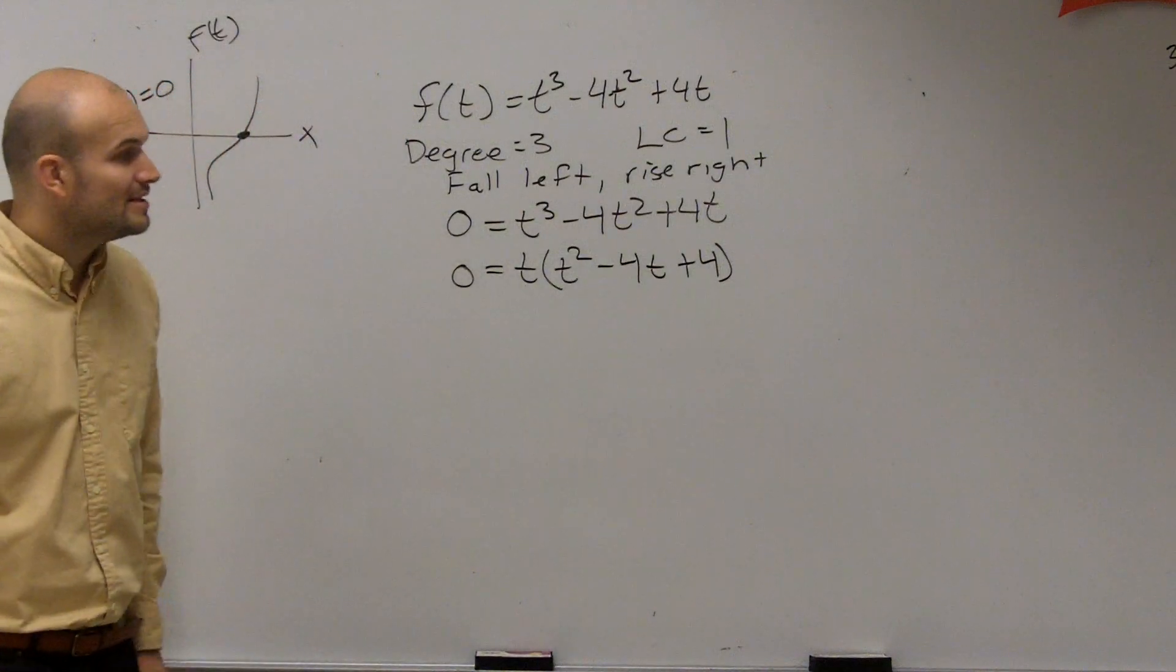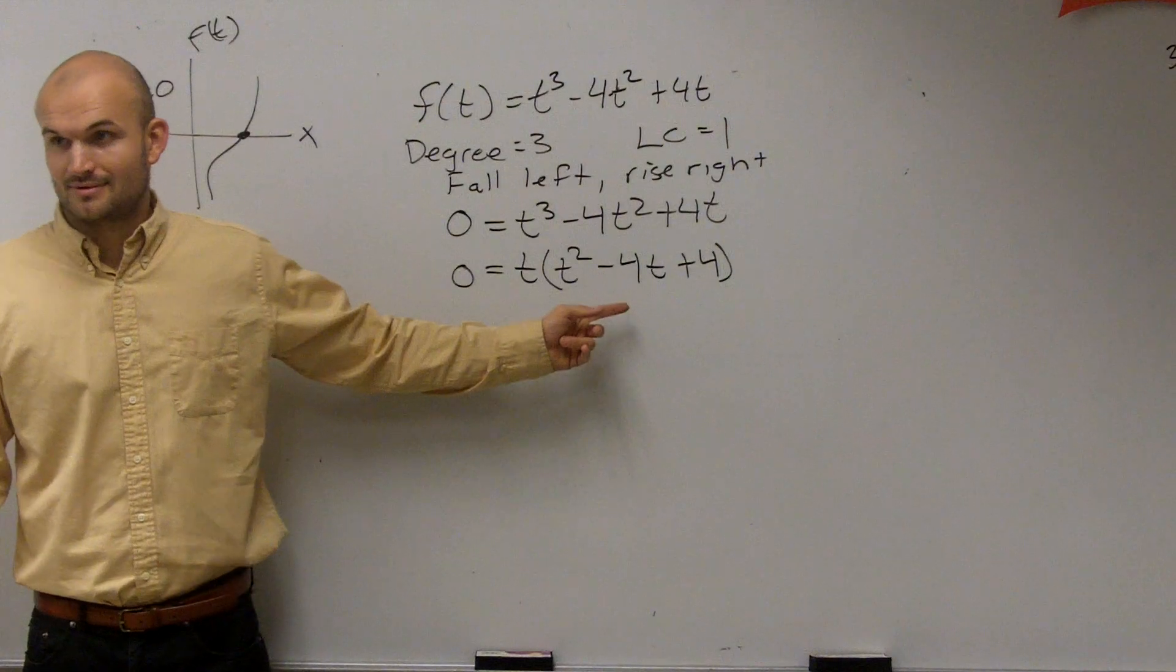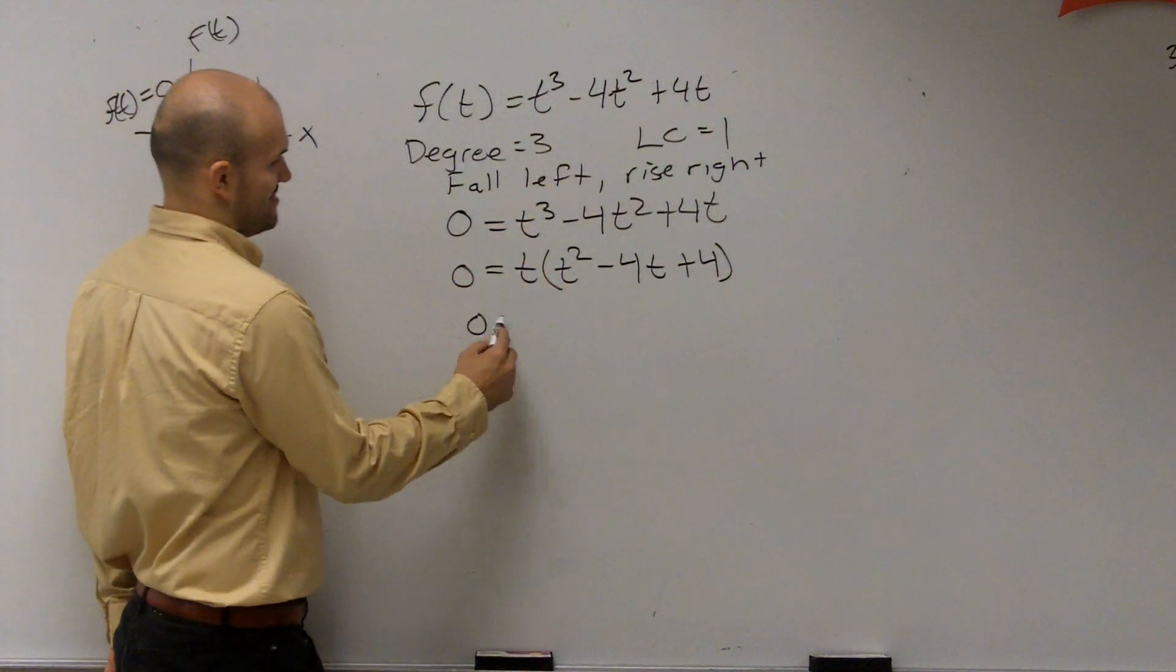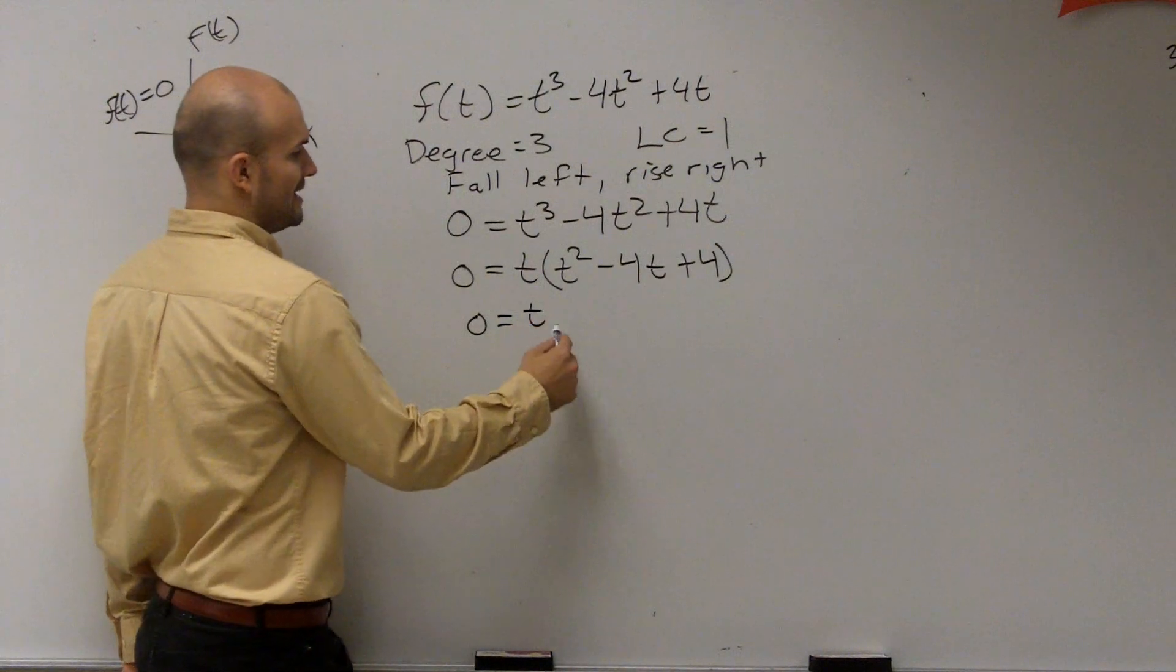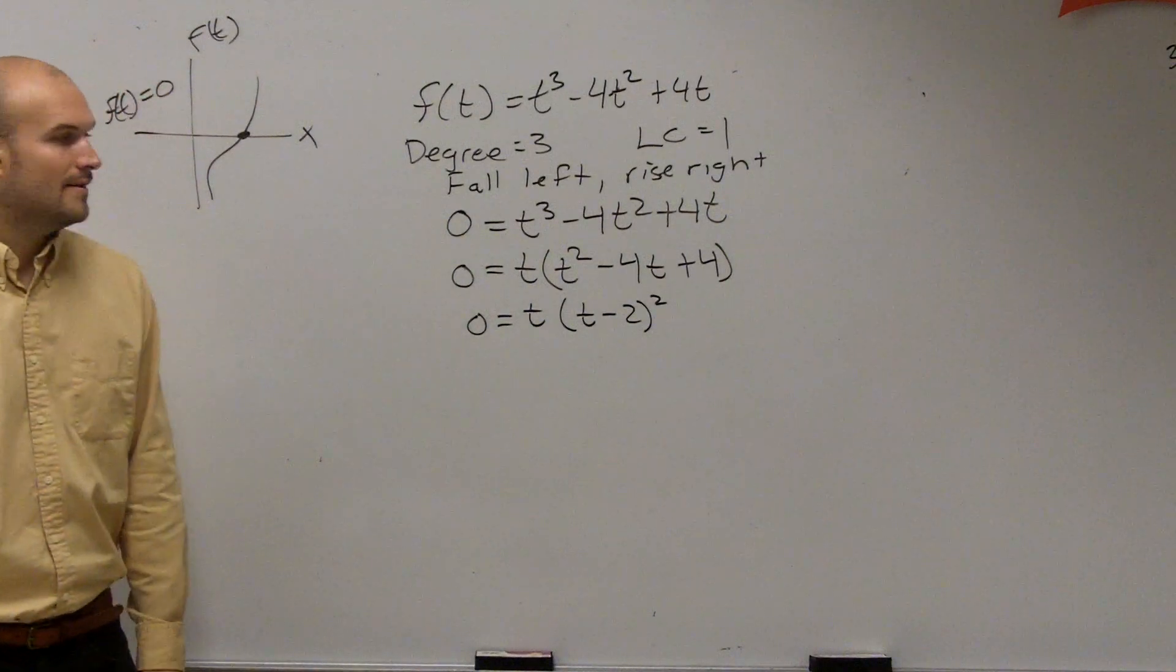So you're left with t squared minus 4t plus 4. Now hopefully with completing the square, you guys would notice now that this is a special type of trinomial. Perfect squared, squared, squared, trinomial. So this equals t times t minus 2 squared.